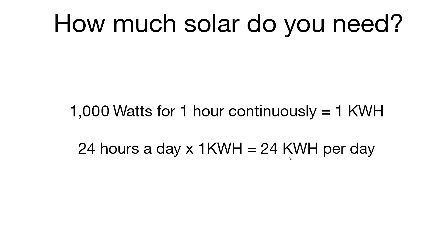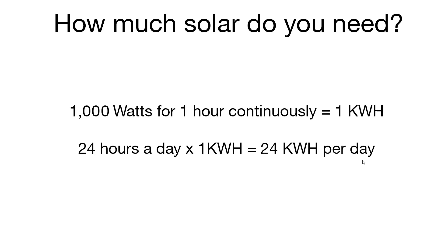My mining farm is currently using about 4,000 watts continuously for 24 hours, which is equivalent to 96 kilowatt hours per day. 96 kilowatt hours times 30 days in a month gives you 2,880 kilowatt hours. 2,880 kilowatt hours times my current kilowatt hour price of 13 cents equals $374 per month.